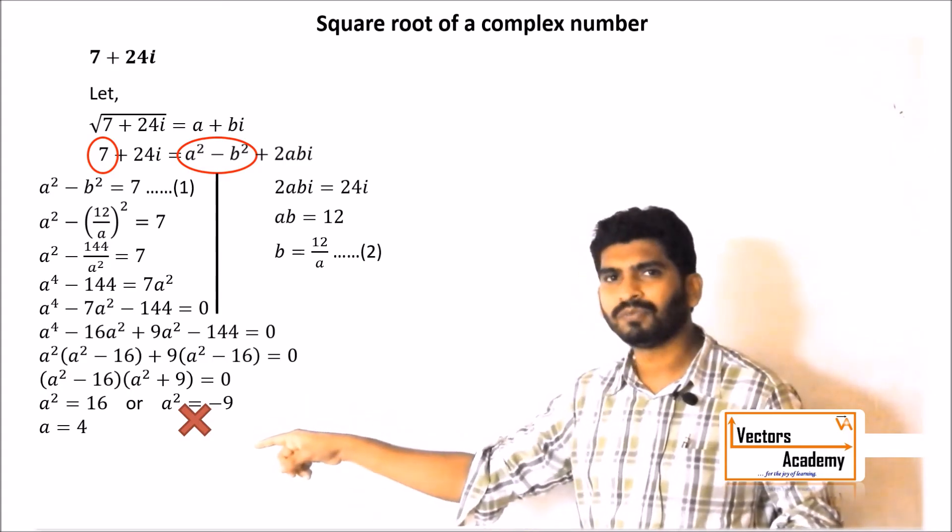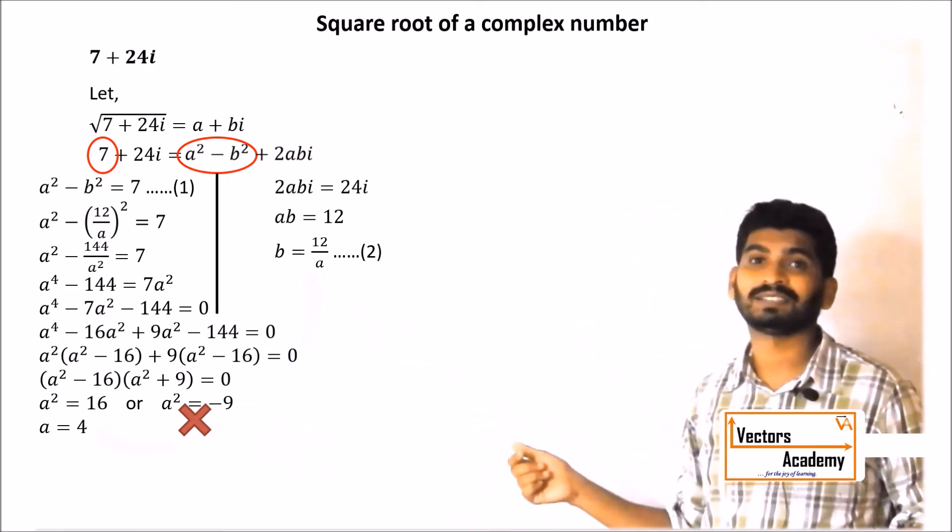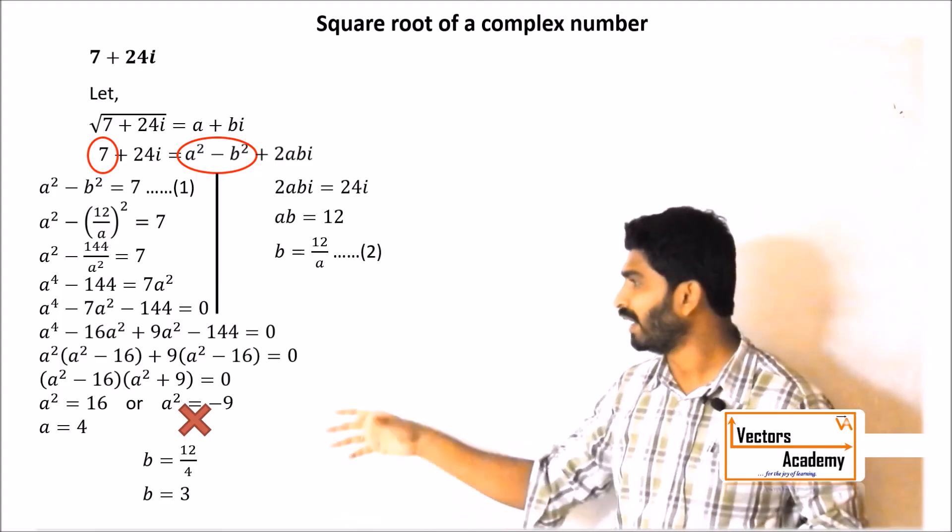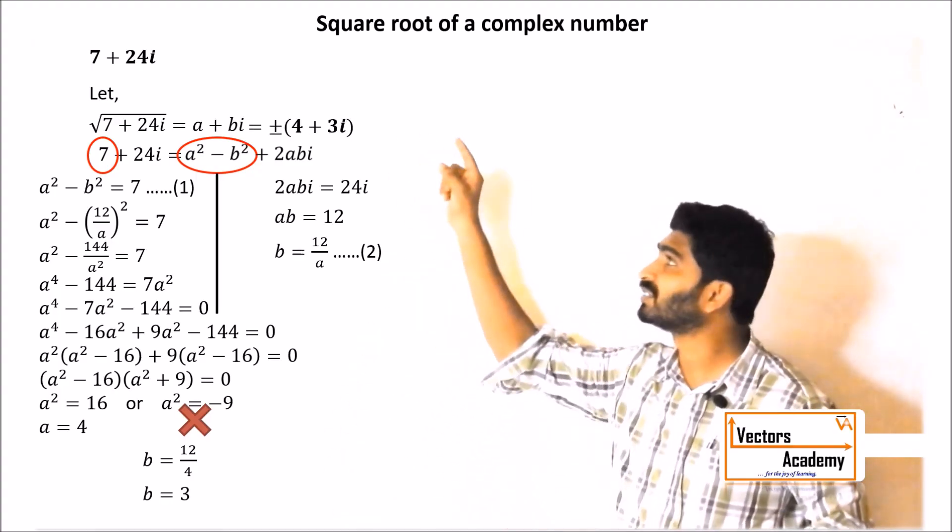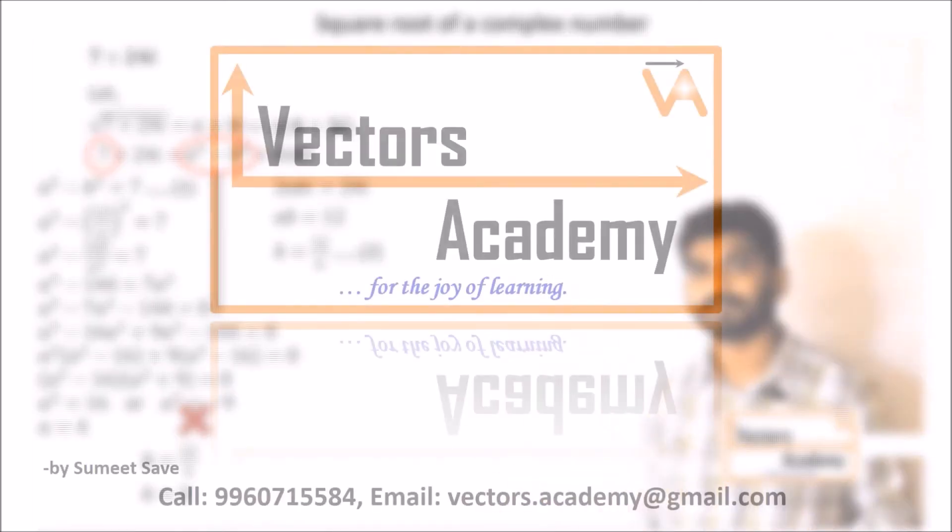Once you get the value of a, substitute this value in equation 2 to get the value of b as well. Finding out a and b, we get the square root of the number. This is how we find the square root of a complex number.